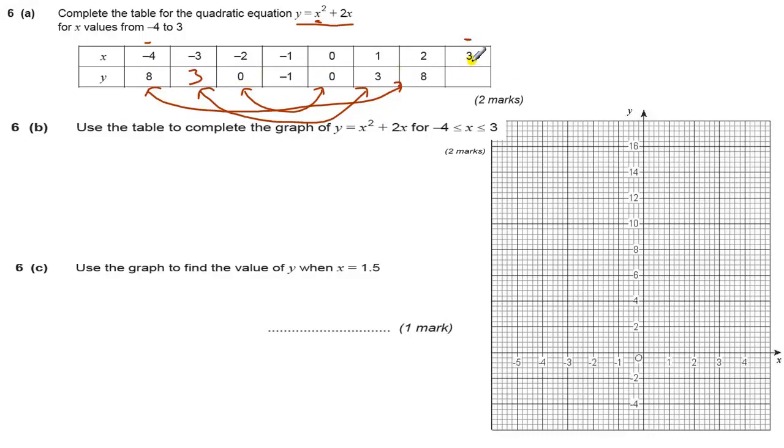This final one here, where x equals 3, we need to work out this formula when x equals 3. So that's 3 squared plus 2 times 3, which is 9 plus 6, which is 15. So that value will be 15. One mark for each.